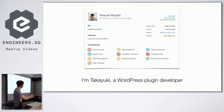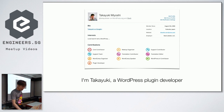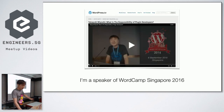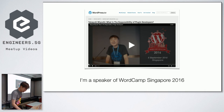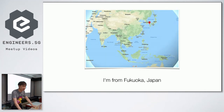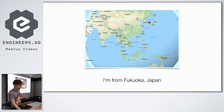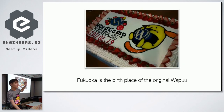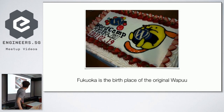I'm Takayuki. I'm a plugin developer, and this is my profile page. Three years ago, I had a speech at WordCamp Singapore. This is my video. I'm from Fukuoka, Japan. Fukuoka is here, and Fukuoka is known as the birthplace of Wapuu — the original Wapuu. Do you know that? In 2011, a designer in Fukuoka made the original Wapuu.